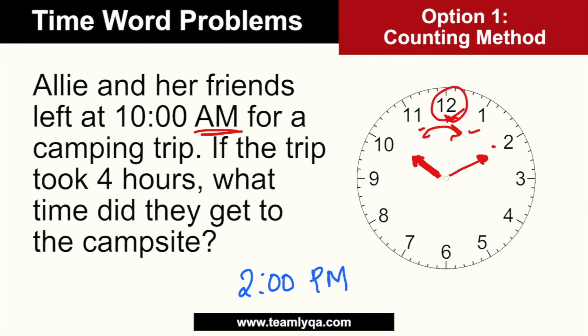Some people use a mental clock, some use fingers — that works too. A common mistake people make is they start counting at 10 itself, so they count 10, 11, 12, 1 and get only four numbers. That's wrong. Your count should start at the first hour after 10. So: 11, 12, 1, and then 2 — that's your fourth hour. Because technically, the first hour is from 10 to 11. That is the counting method.